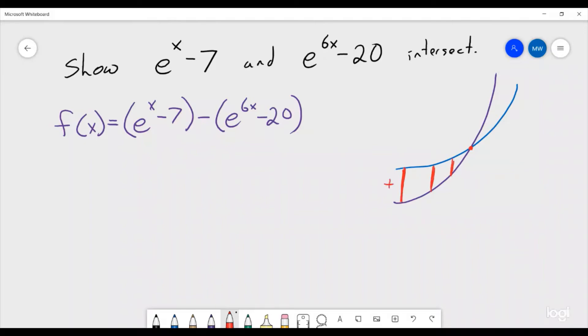So on this side, this distance would be positive, and on this side, the distance would be negative. So what we would hope to be able to find is an x value where this is negative and an x value where it is positive.